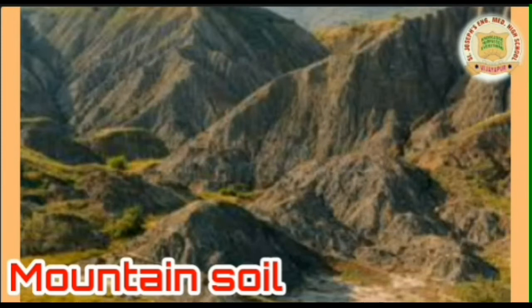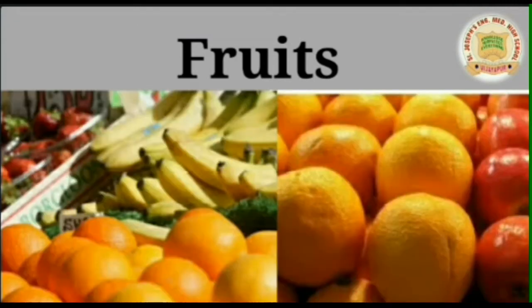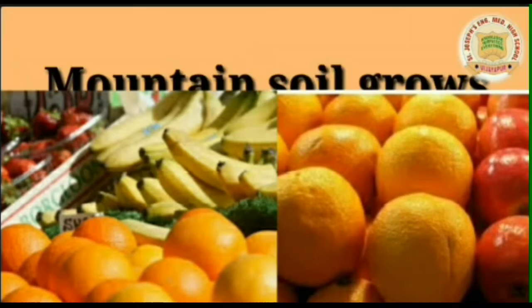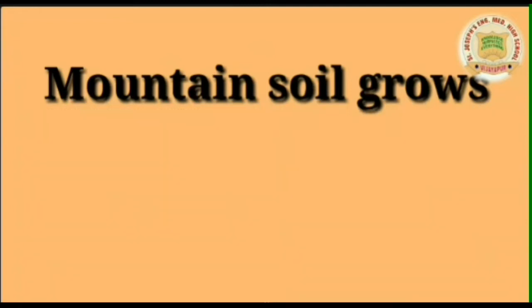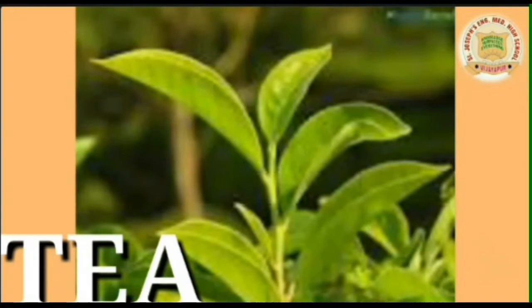Mountain soil is generally found on hill slopes which are covered by thick forest. In India, it is found mostly in Jammu and Kashmir, Himachal Pradesh, Sikkim, and Arunachal Pradesh. This soil grows very good quality fruits, potatoes, spices, as well as tea and coffee.